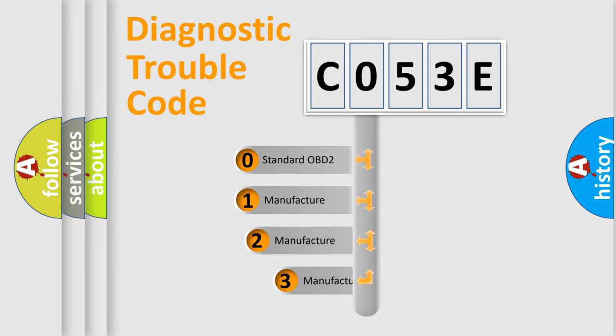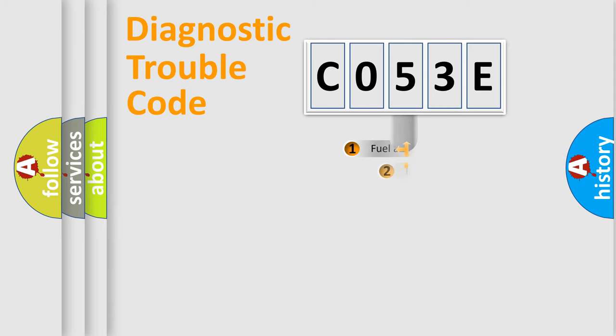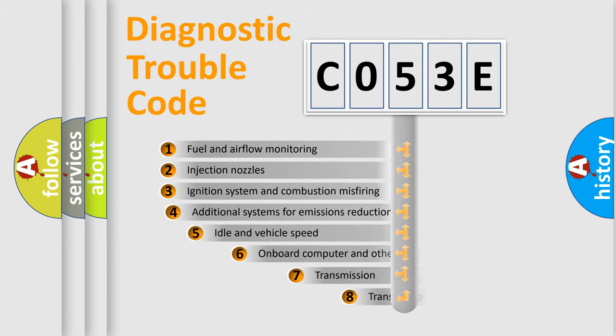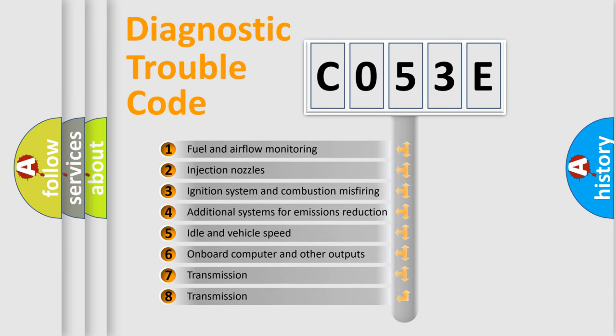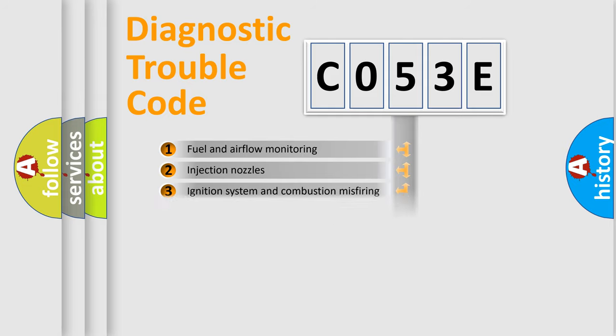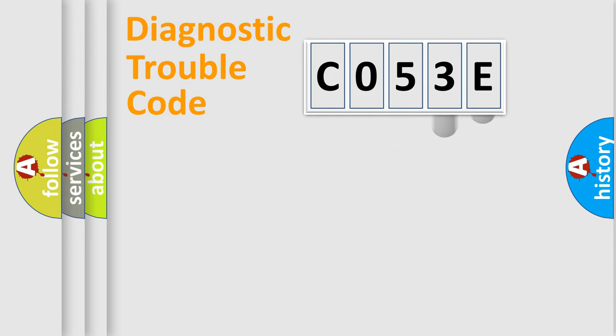If the second character is expressed as zero, it is a standardized error. In the case of numbers 1, 2, 3, it is a more prestigious expression of the car-specific error. The third character specifies a subset of errors. The distribution shown is valid only for the standardized DTC code.